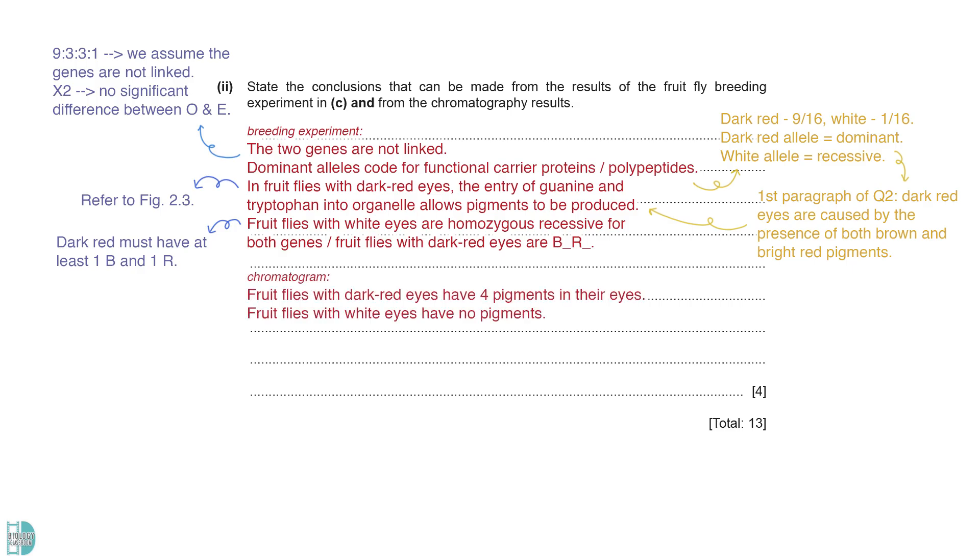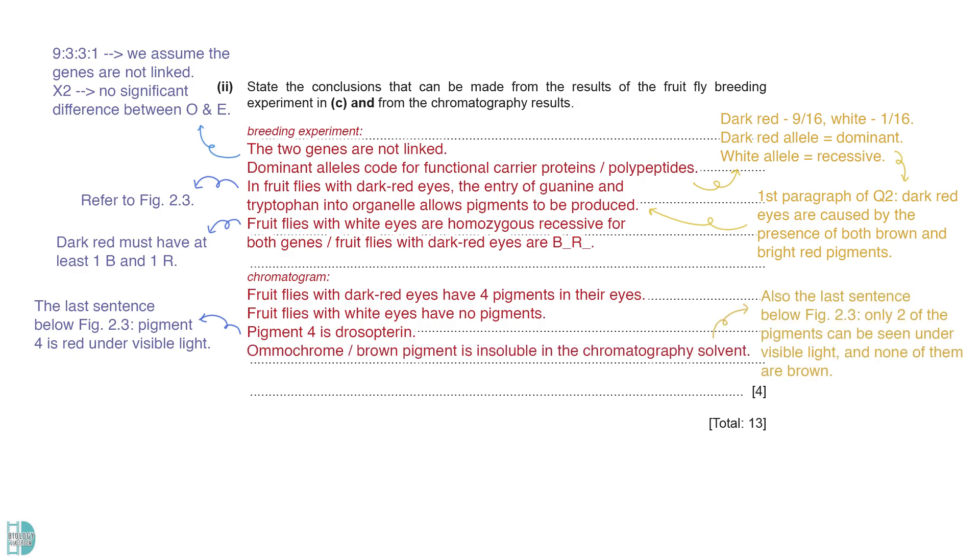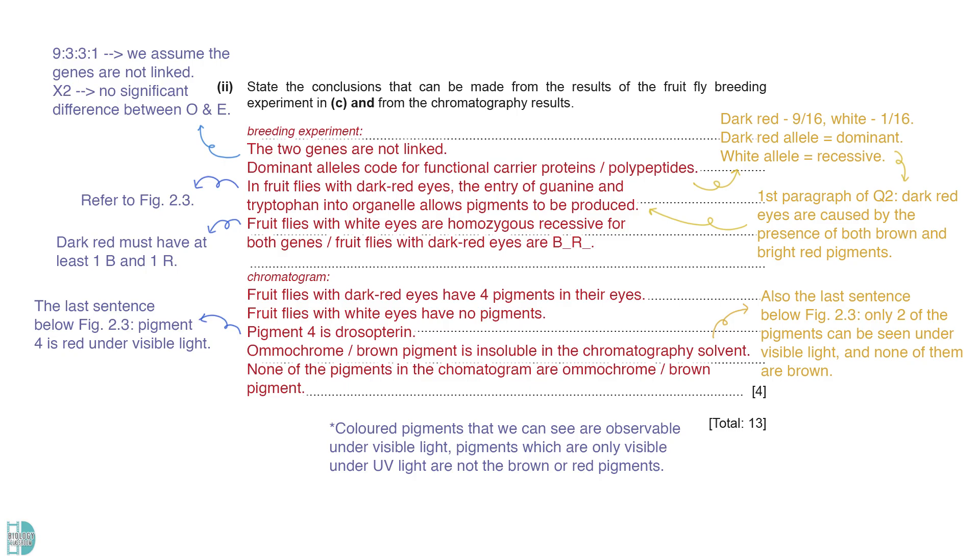The chromatogram indicates that dark red eyes contain 4 pigments while white eyes contain none. The last sentence below figure 2.3 says that pigment 4 is red under visible light, so it is drosopterine, the red pigment. The same sentence also mentions that only 2 of the pigments can be seen under visible light and none of them are brown. So, we can conclude that none of the pigments are omochrome, possibly due to their insolubility in the solvent. Note that the coloured pigments that we can see are observable under visible light, so the other pigments which are only visible under UV light are not brown or red pigments.